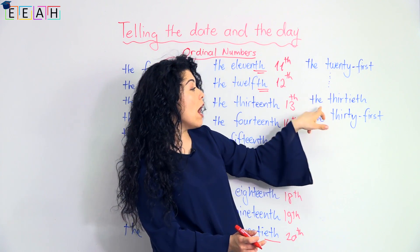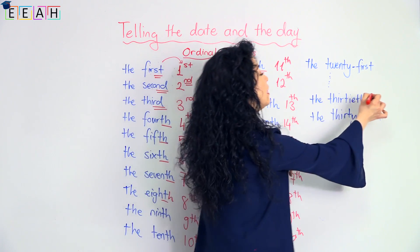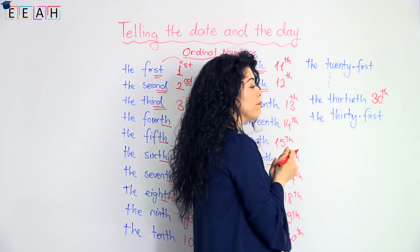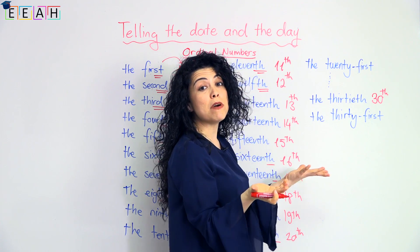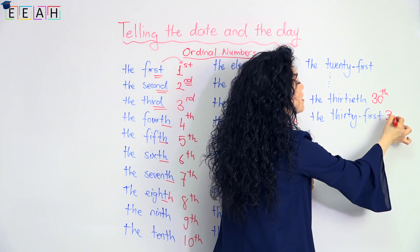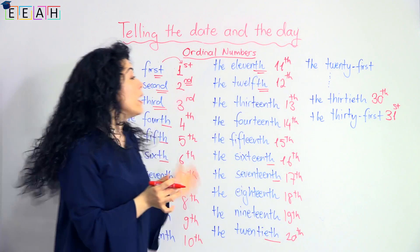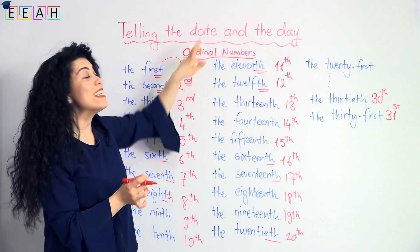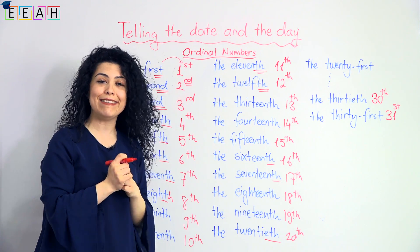It continues until the thirtieth. The last possible day of the month is the thirty-first. We need these ordinal numbers to write and say the date.